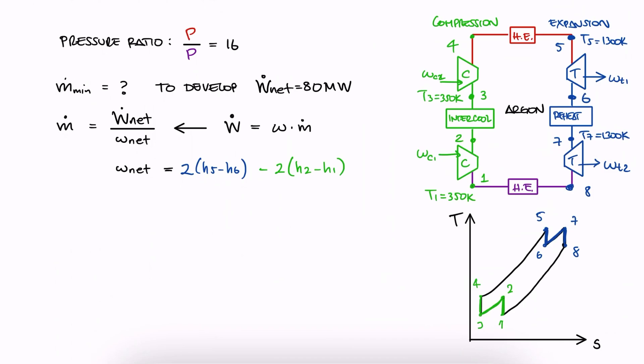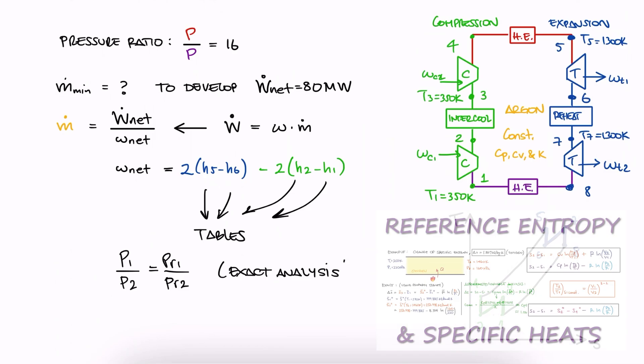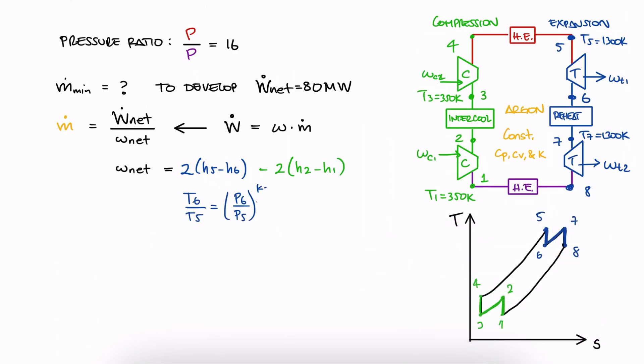The difference here is that the working fluid is argon, which we know has constant specific heat values CP and CV. This means that instead of finding enthalpy values from a table and using the pressure-ratio relationship we labeled as the exact analysis derived in the Reference Entropy 12-minute lecture, we can use the temperature-to-pressure relationship of the approximate analysis. This we do so that we calculate the work in terms of the specific heat CP and the temperatures that we find with that relationship.